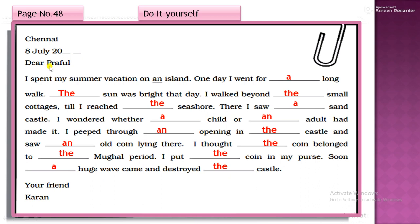These are the minor mistakes we commit. Now, exactly this letter is about the summer vacations. So where Karan has spent vacations, he is writing to his friend. So now, we will fill with the articles. I spent my summer vacation on an island. On an island. So what will I? One day I went for a walk, for a long walk.